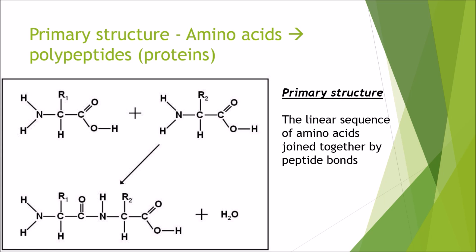So starting off with the primary structure. This is when amino acids join together to form polypeptides. Here we've got one amino acid and here we've got another amino acid. When these two come together, this OH here and this H here will bond together to form water. And the remaining is a dipeptide, a combination of two amino acids. The primary structure is the linear sequence of amino acids joined together by peptide bonds.